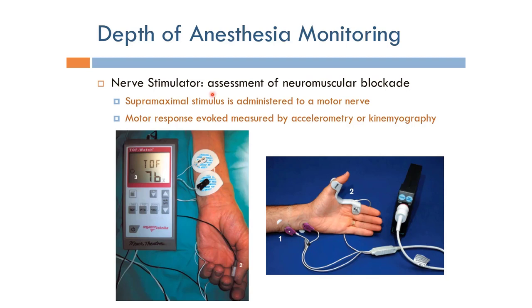This can be assessed using a nerve stimulator, a very small device that assesses the neuromuscular blockade — making sure that the link between the nerves and the muscles is blocked, as is the function of inhalation anesthetics. To assess this, we use a supra-maximal stimulus administered to a motor nerve by attaching electrodes and delivering a very large stimulus to make sure all fibers of the motor nerve in that region are completely excited.